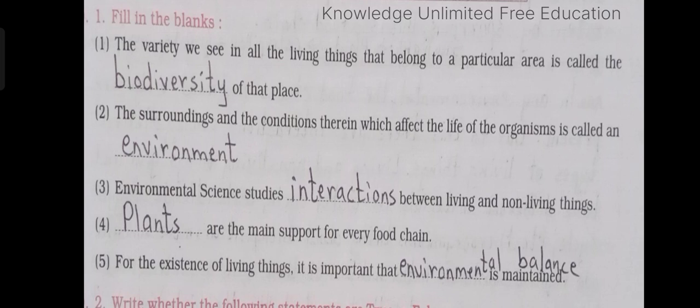Question number 1: Fill in the blanks. Number 1: The variety we see in all the living things that belong to a particular area is called the dash of that place. Answer: biodiversity.